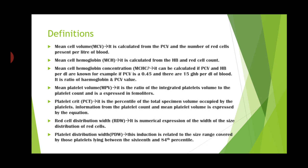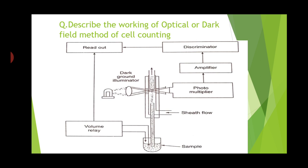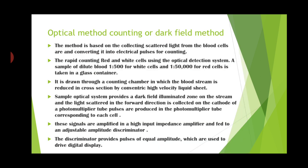Now we will see the working of the optical or dark field method of cell counting. The setup includes a volume relay, sample, sheath, photomultiplier, amplifier, discriminator, and counters. This method is based on collecting scattered light from blood cells and converting it into electrical pulses for counting the rapid counting of red and white cells using the optical detection system.